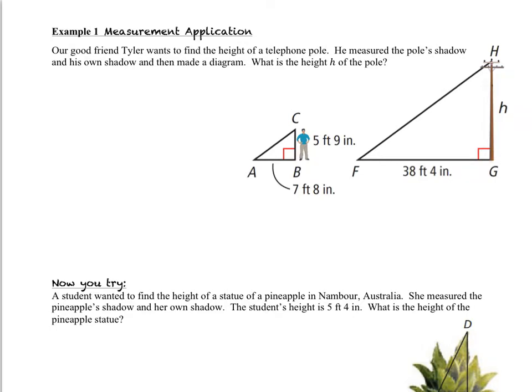In example one, our good friend Tyler wants to find the height of a telephone pole. He measured the pole's shadow and his own shadow, and then made a diagram. What is the height h of the pole? Looking at the diagram, we've got two similar triangles. Because similar triangles are proportional, we can use the relationship of measurements on one to find measurements on the other.